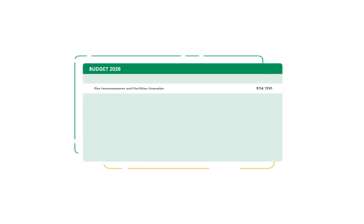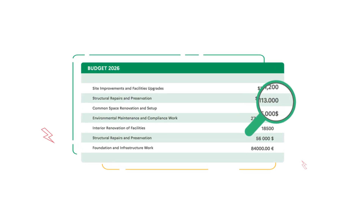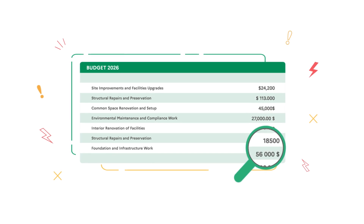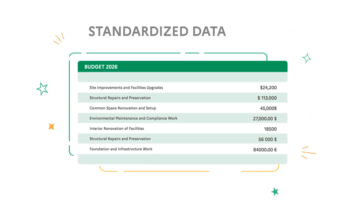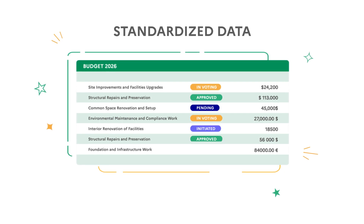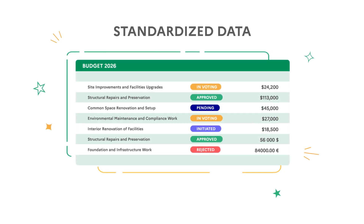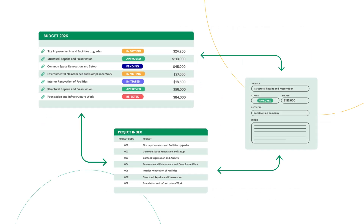Speaking of data, imagine you're tracking a bunch of your team's projects. It's not always easy to understand at a glance what's going on. With Grist, data is consistent. You can, for example, define a list of choices for a given column or standardize number formats, simplifying your analysis. You can go even further by relating and linking your data, eliminating duplication and reducing errors.